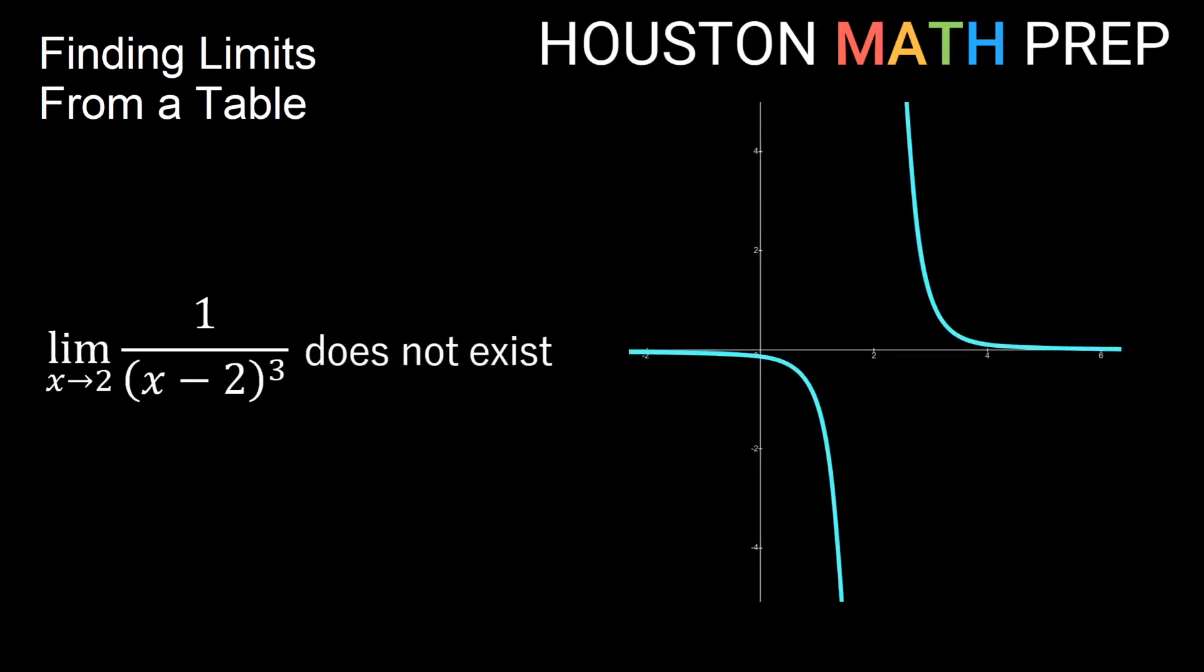And if we look at the graph of this, you can see what happens. On the left side of x equals 2, the graph is going to go down without bound forever. It's going to continue more and more negative. And from the right side of x equals 2, we'll just continue more and more positive without bound, getting larger and larger there.